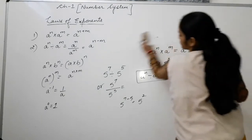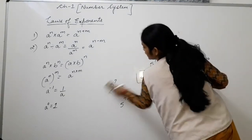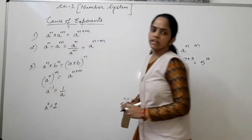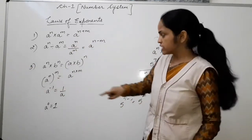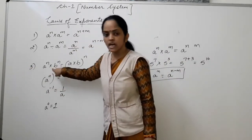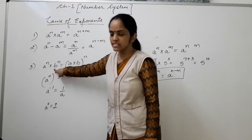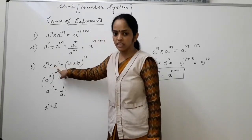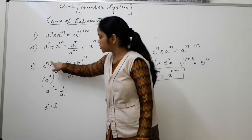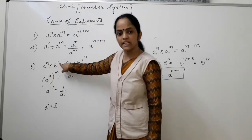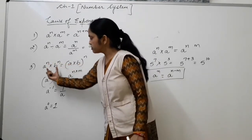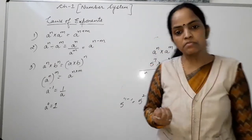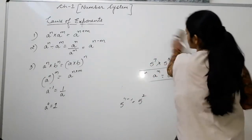Third law of exponents: a to the power n multiplied by b to the power n. In this case, bases are not same, but both the bases are in multiplication and the exponent is the same. So how can we solve questions based on this third law?